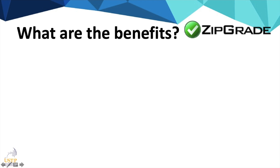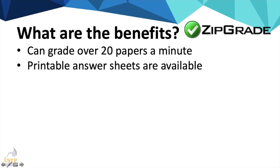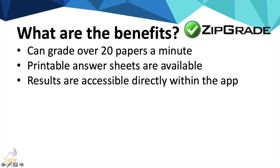What are the advantages of using this app? First, you can check at least 20 papers a minute. There are available printable sheets for 20, 50, and 100 items. If you have a premium account, you can customize your own answer sheet. The scores of students can also be easily accessible within the app.